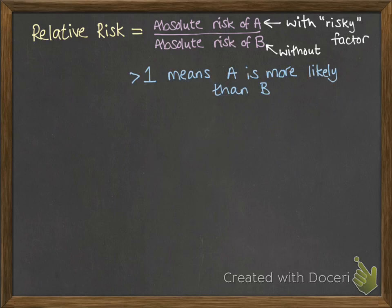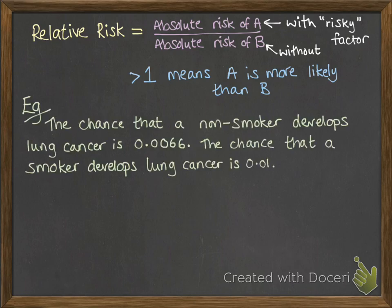Let's just do one more thing. If that turns out to be greater than 1, that means that A is more likely than B. The thing on the top is more than the thing on the bottom, so it's more likely. Okay, so let's put some numbers into it.